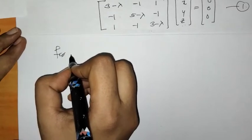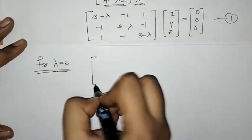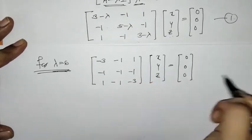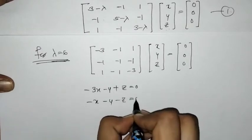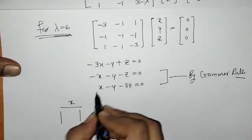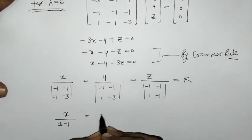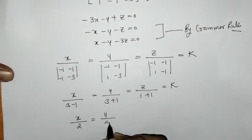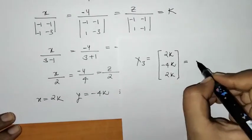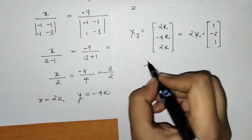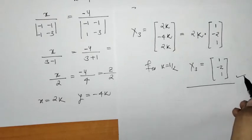Next we find the eigenvector for lambda equals 6. We put lambda equals 6 in the matrix equation and proceed as before to get the third eigenvector x3.